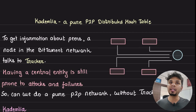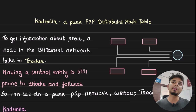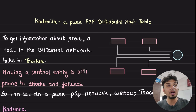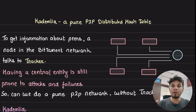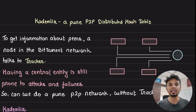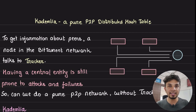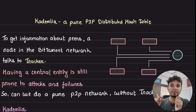Kademlia is a distributed hash table implementation used as an overlay network for BitTorrent. Instead of talking about micro details of how it is used in BitTorrent, today we spend time understanding Kademlia in depth. We take a super detailed look into distributed hash table implementation and see how it can power the routing of requests without any central authority. We look at how data and nodes are represented, how it leverages XOR as a distance function, and how it always converges to the node we are looking for.